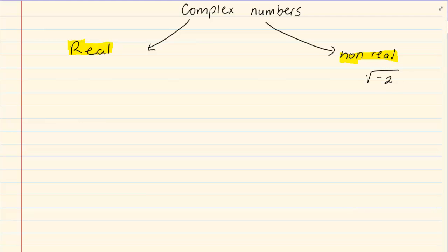The next one we have is real numbers. Real numbers can be divided into two things: irrational and rational.